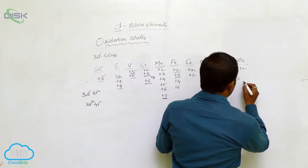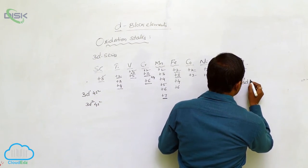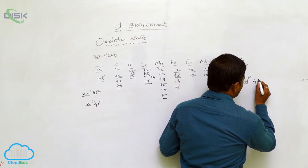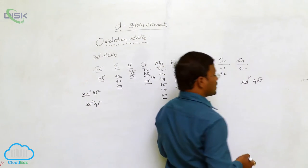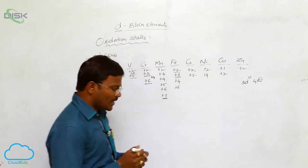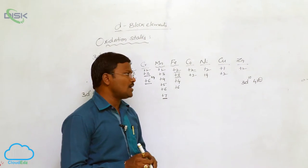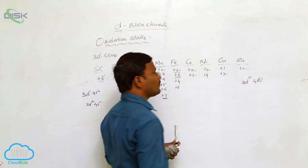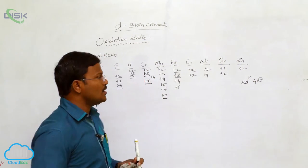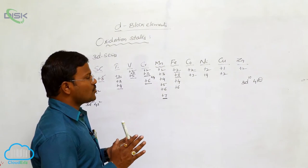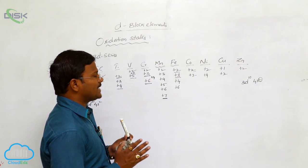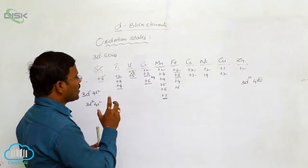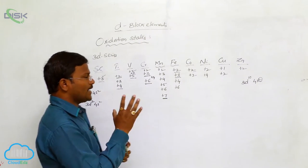Why does zinc exhibit only plus 2? Because the electron configuration of zinc is 3D10, 4S2. Only the elimination of electrons from the s-orbital takes place to provide the plus 2 oxidation state. Due to the fully-filled electrons present in the d-orbital, zinc never loses electrons from there. Hence, plus 2 is the oxidation state satisfactorily exhibited by zinc. This covers the general oxidation states of d-block elements.